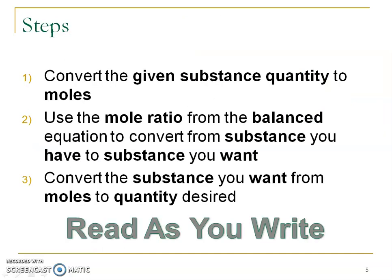Make sure that you're reading as you're writing. Basically there are going to be three steps or three conversion factors. The first one is going to take our substance A quantity and convert it to moles. The second step is that new mole ratio that we just learned in the previous notes video — you need a balanced equation to get to or from substance you have to substance you want. Our third conversion factor is going to be from substance B in moles to that desired quantity of substance B.